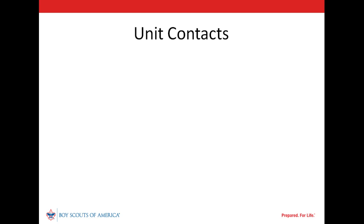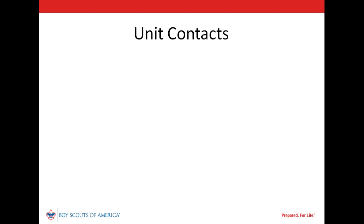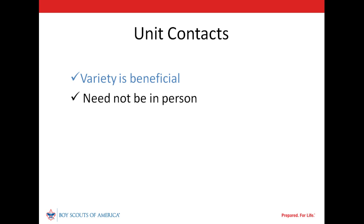We used to speak of unit visits, but with the new tools and techniques available, that's too limiting. We now use contacts to describe the broader range of interactions Commissioners have with units. Frequent contacts are best, and contacts should be significant — they should help unit leaders accomplish some element of the Unit Service Plan or record progress. Making contact in a variety of settings provides a better view of a unit's strengths and needs. Commissioners should attend unit meetings, committee meetings, outings, and other activities to gain a balanced perspective. Significant contacts need not be in person; a phone call or series of emails could truly be significant. On the other hand, a passing conversation at Roundtable may foster communications, but it's unlikely to result in Unit Service Plan progress.